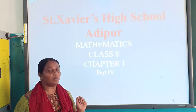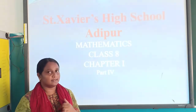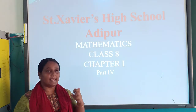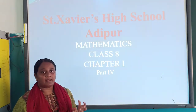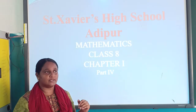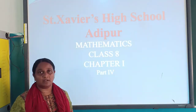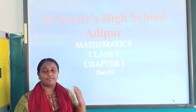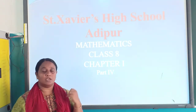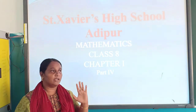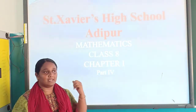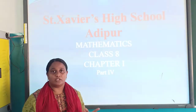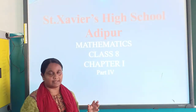In the last class we discussed about the number system, different types of numbers — natural numbers, whole numbers — and then integers and rational numbers. We also studied the basic things needed for working with rational numbers: addition, subtraction, multiplication, and division of fractions. Then we discussed the number line, as well as properties of natural numbers, whole numbers, and integers.